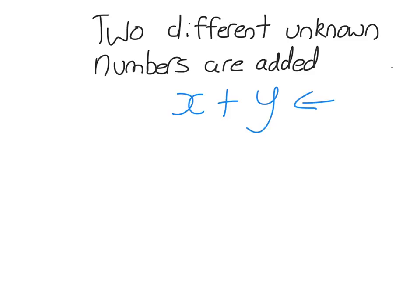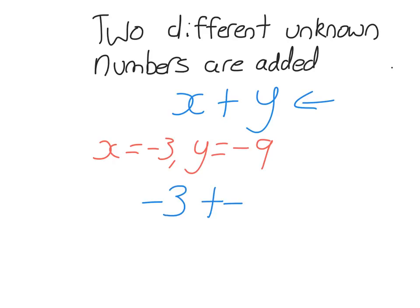We've represented a situation — it could be the amount of money two people have, the amount of chocolates they have, whatever. We've represented that in a mathematical expression. Sometimes we will want to substitute different values. You might be told X is negative 3 and Y is negative 9. It doesn't matter that we have two variables — we do exactly the same as before. I just change X to negative 3 and Y to negative 9, so the value of that expression is just negative 12. I can use my calculator.